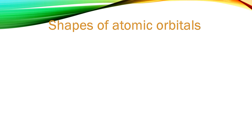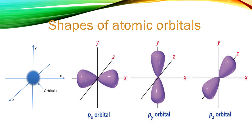Before we look at the formation of sigma and pi bonds, let's have a recap of atomic orbitals. S-orbitals are spherical — here's an example. P-orbitals are dumbbell shaped, and there are three p-orbitals in the p subshell: px, py, and pz.